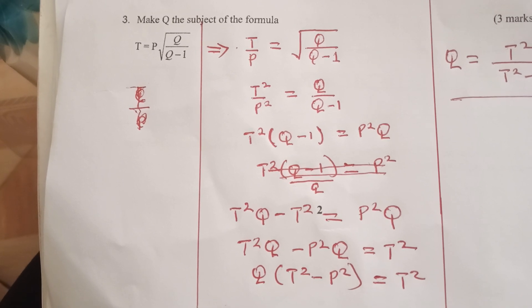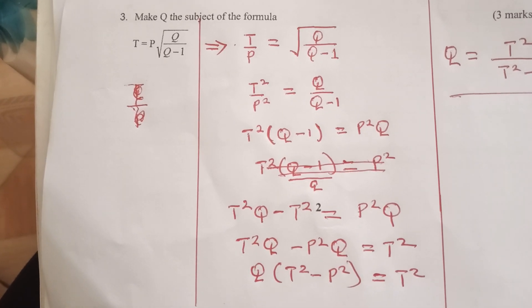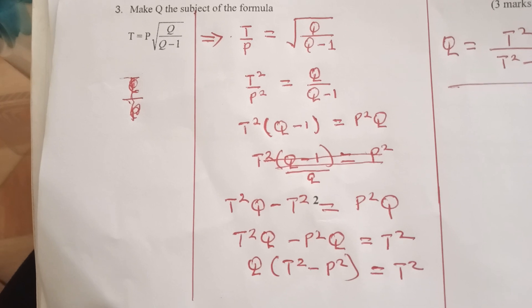Then we square both sides, we shall have T squared over P squared is equal to Q over Q minus 1.